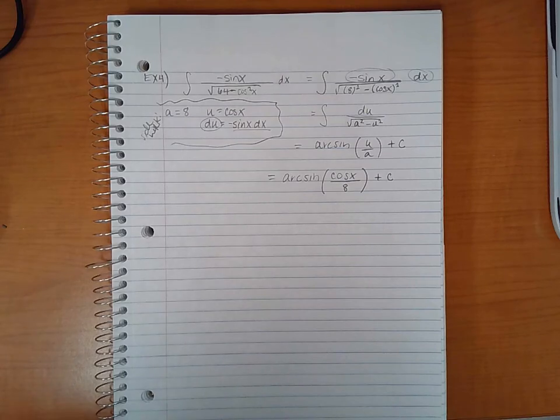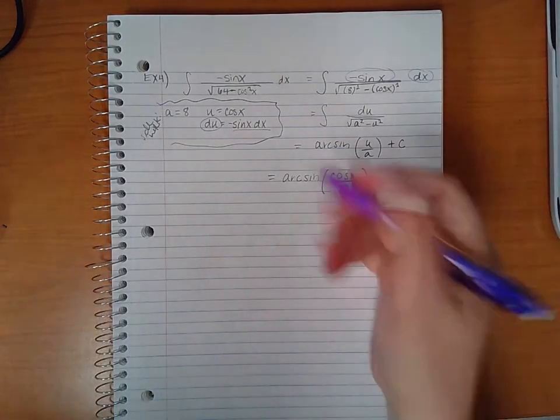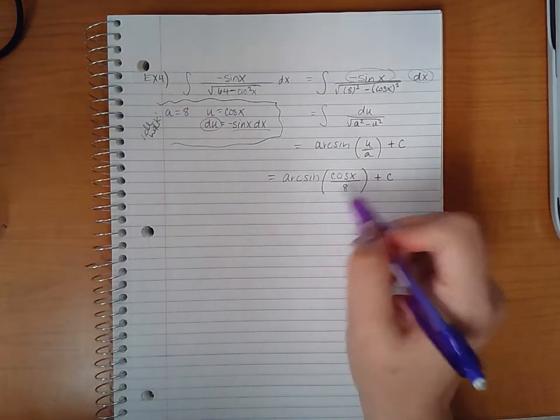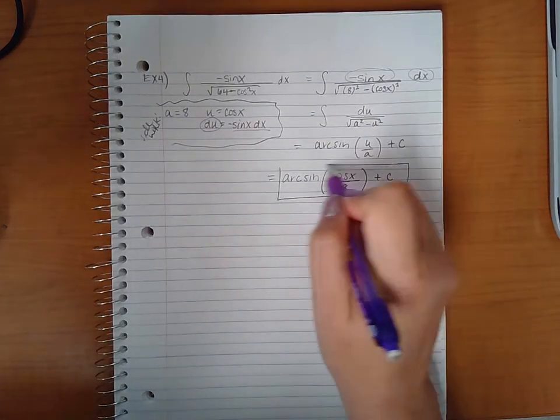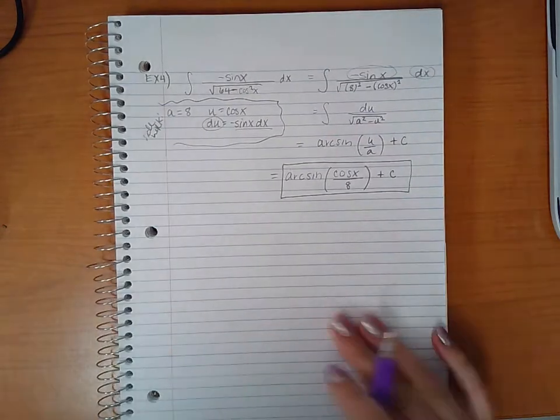And then arc sine and cosine don't undo each other. So if this was sine, I may have been able to simplify this a little bit, but it's not. So we're just going to leave it like that. Thank you.